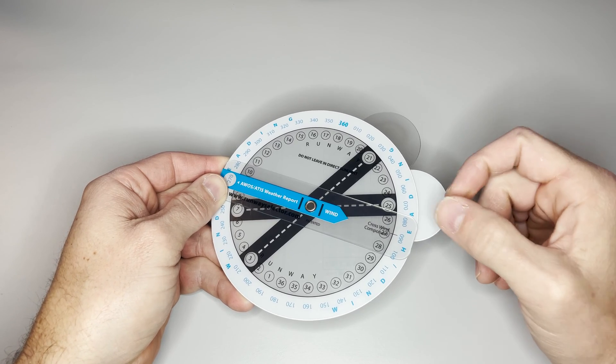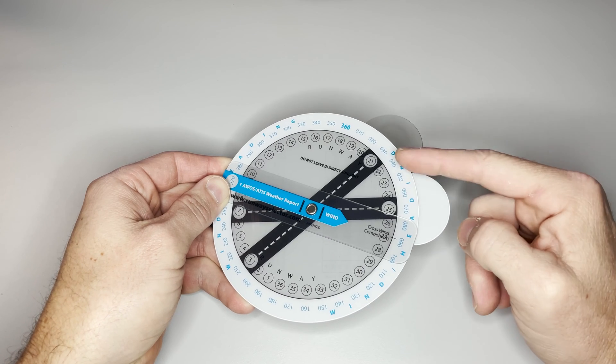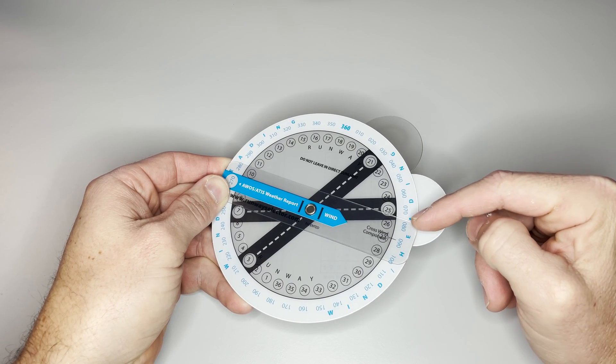This calculator does go one step further to help you figure out the crosswind component. Around the outside, there's these small numbers in blue.